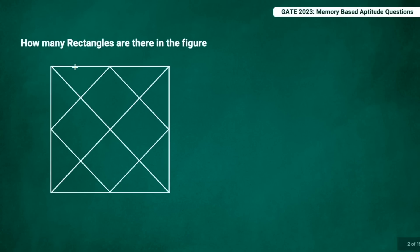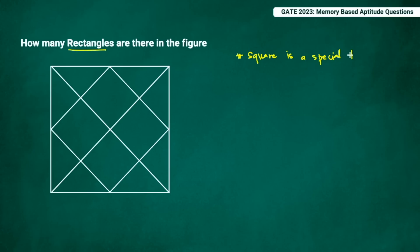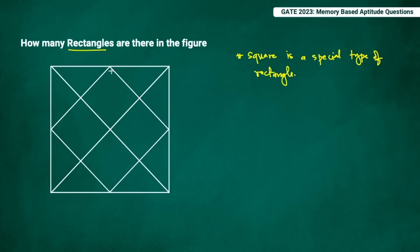This question asks how many rectangles are in a given figure. Looking at the figure, there were four rectangles to be precise, but one important thing to keep in mind is that squares are also rectangles — a square is a special type of rectangle. Counting squares: there's a bigger square, another bigger square — that's two. Then individually, square 3, 4, 5, and 6 — six squares total. Then rectangles formed by combining squares: the 7th, 8th, 9th, and 10th. Total: 10 rectangles.